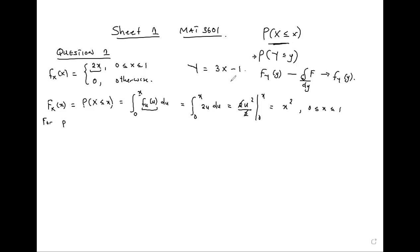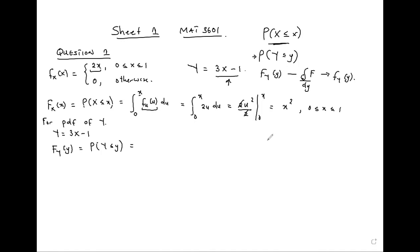For the PDF of Y, we know Y = 3X - 1, so we find the CDF of Y: F_Y(y) = P(Y ≤ y). We substitute Y = 3X - 1, giving 3X - 1 ≤ y. Solving for X, we take the 1 to the other side and divide by 3, so X ≤ (y + 1)/3.